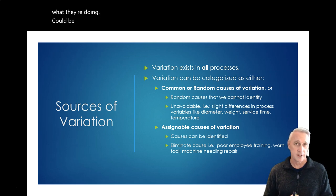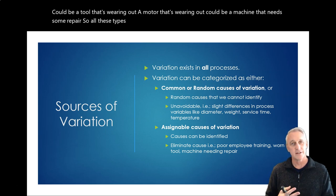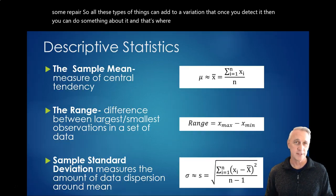It could be a tool that's wearing out, a motor that's wearing out. It could be a machine that needs some repair. So all these types of things can add to a variation that, once you detect it, then you can do something about it. And that's where statistical process control comes in.